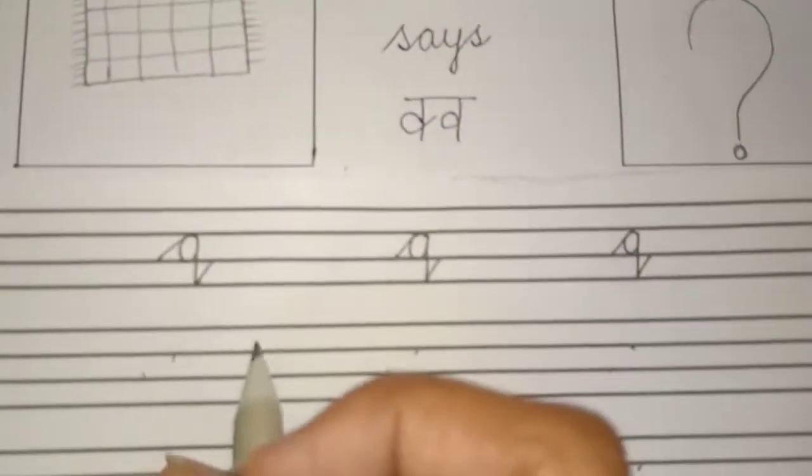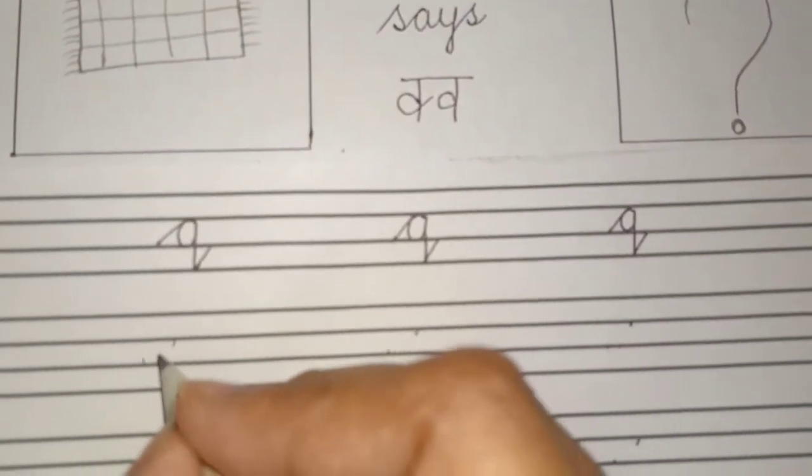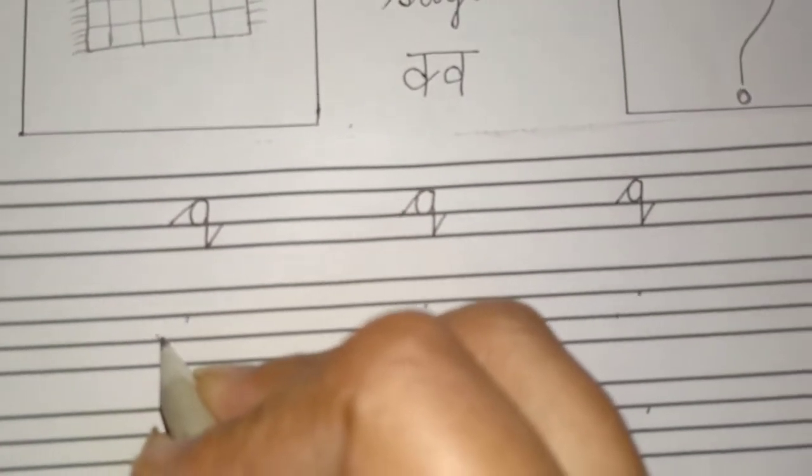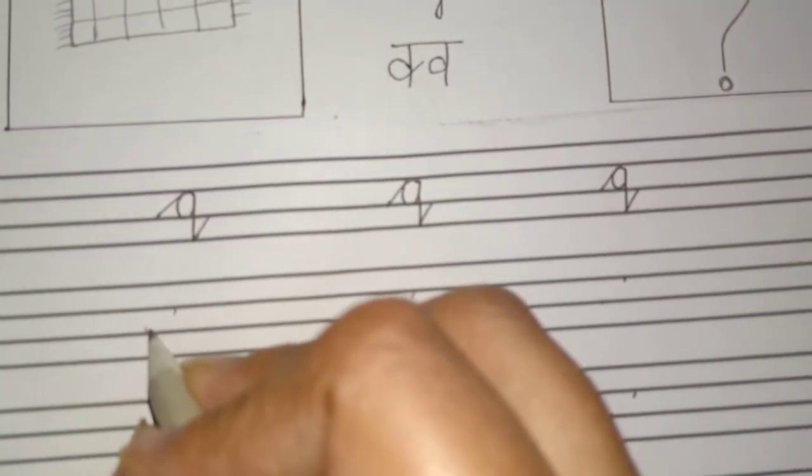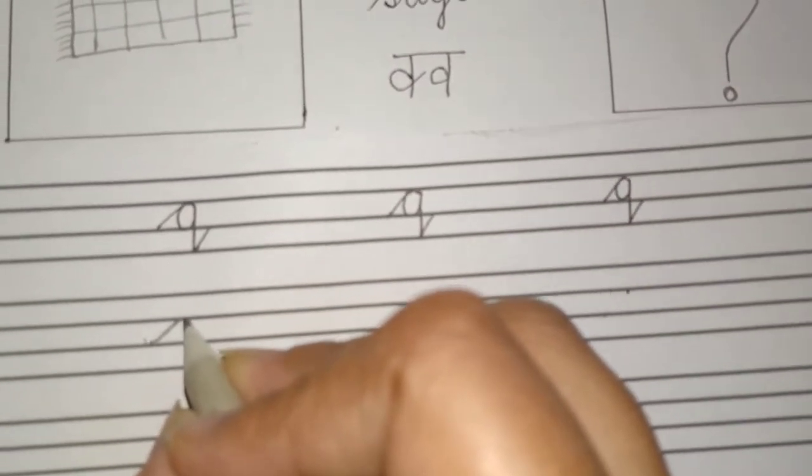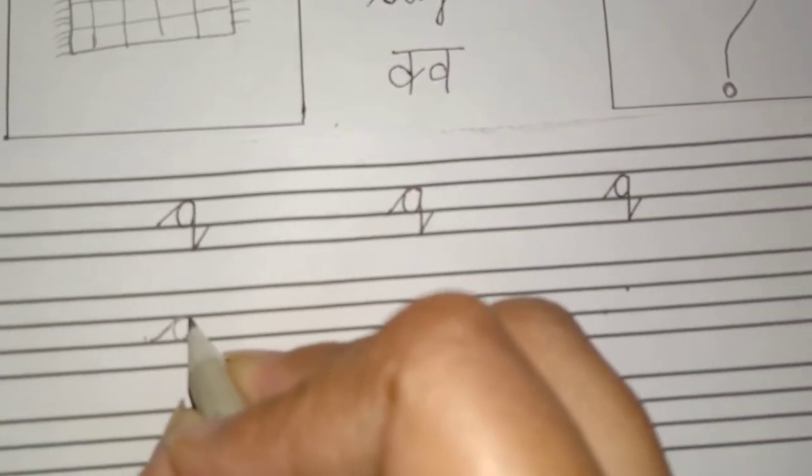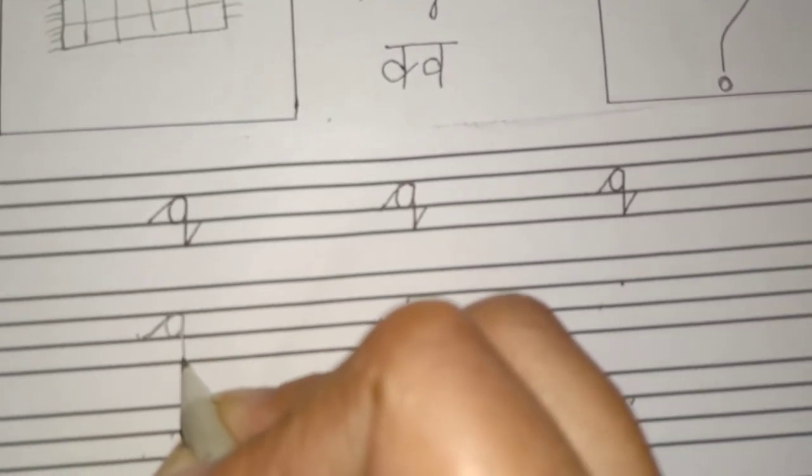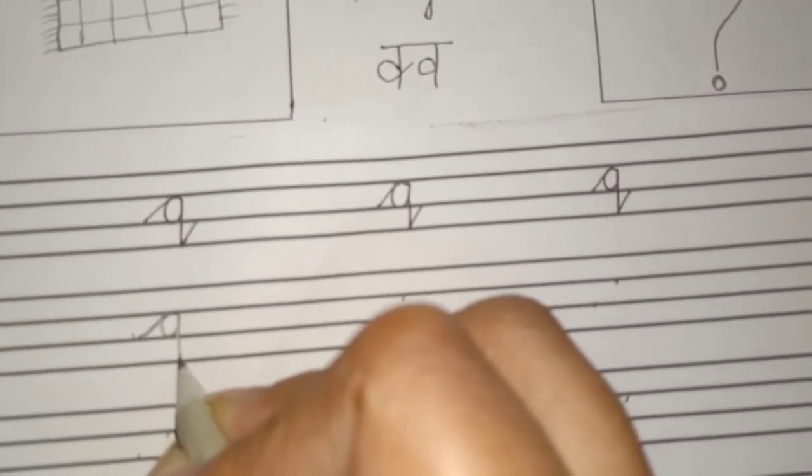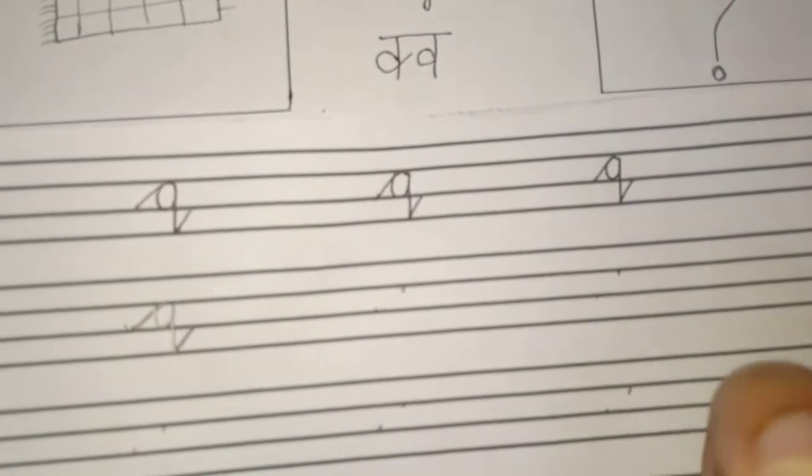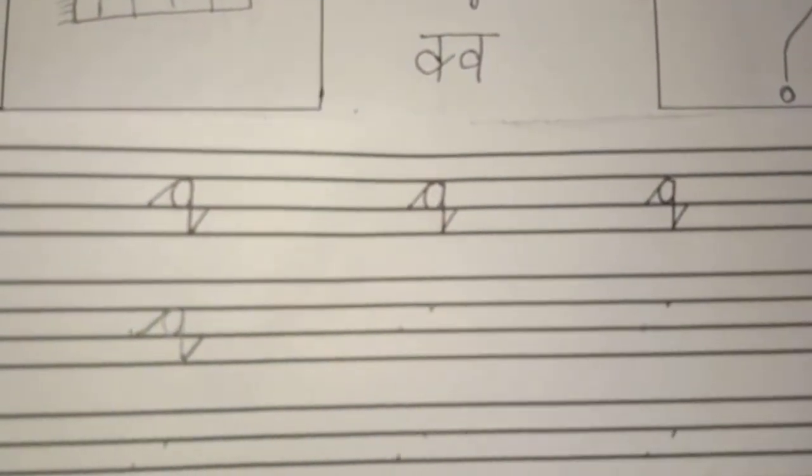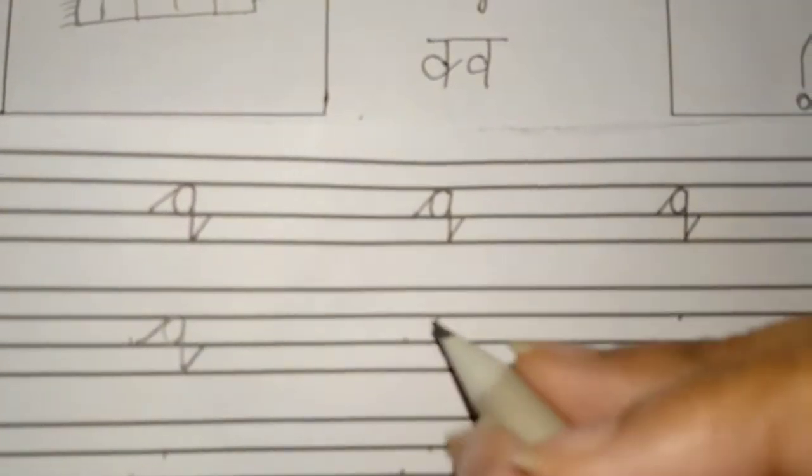Now let's learn how to write Q. Everyone will keep their pencils here on the third line. And you know the rule that you will not pick up your pencils. Make a slanting line upwards, give it a curve, make an A, and bring a straight line down to touch the bottom line, the fourth line. And take it up, slant line. What is this? Cursive letter Q. Let's make it again.